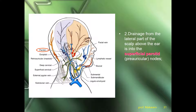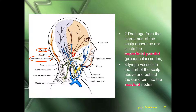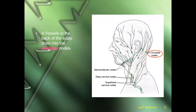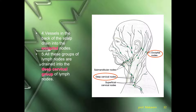Second, drainage from the lateral part of the scalp above the ear goes into the superficial parotid, or pre-auricular lymph nodes, shown with a red circle in the figure. Third, lymphatic vessels from the part of the scalp above and behind the ear drain into the mastoid nodes. Vessels from the back of the scalp drain into the occipital nodes. All these groups ultimately drain into the deep cervical lymph nodes in the neck.